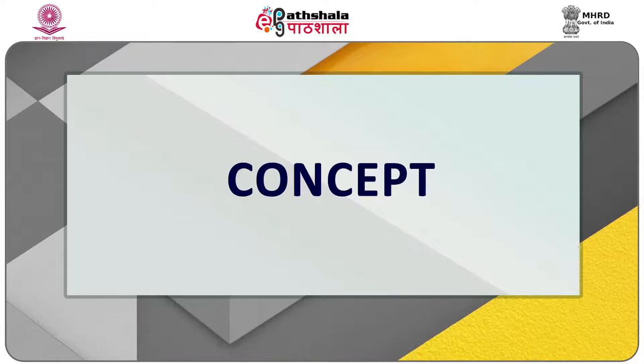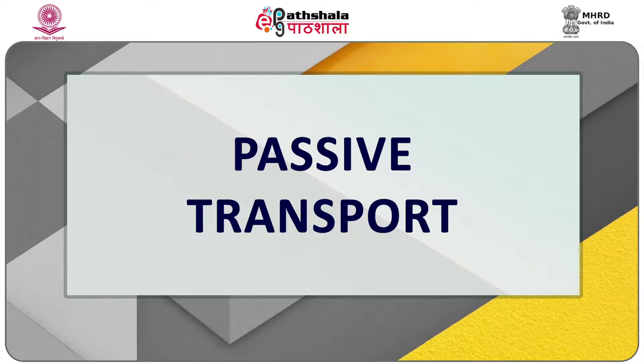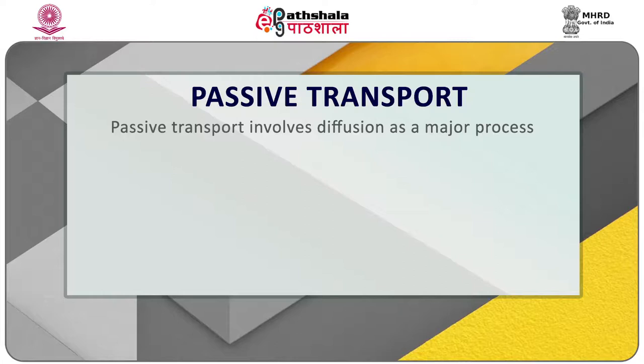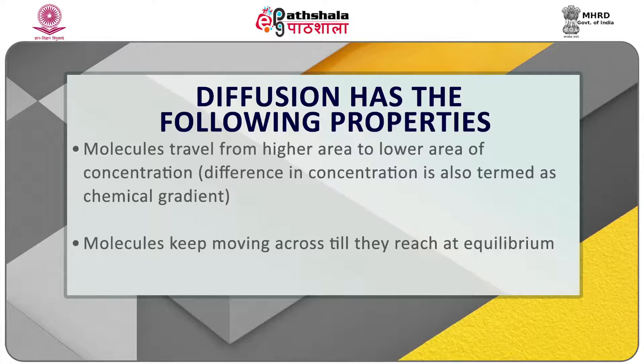In passive transport, though there will be no hindrance, the cell membrane can selectively act as a semi-permeable barrier. Majorly, the size of the molecule and its solubility can influence the movement. The passive transport involves diffusion as a major process. Diffusion has the following properties: molecules travel from higher area to lower area of concentration. This difference in concentration is termed as chemical gradient.